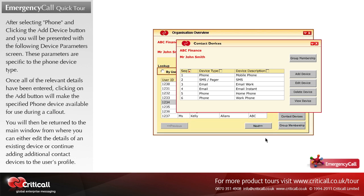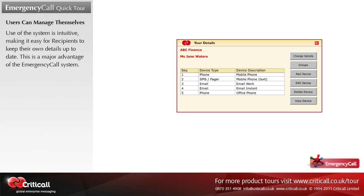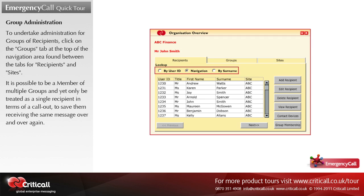You will then be returned to the main window, from where you can either edit the details of an existing device or continue adding additional contact devices to the user's profile. It is possible to enable a recipient to directly access the Emergency Call system themselves via a web browser, where they can only manage their own details including contact devices. They will not be able to initiate a call out, perform any further administration functions, or view the reporting suite. On logging on, a recipient at this level will see a screen showing only their own details. Use of the system is intuitive, making it easy for recipients to keep their own details up to date — a major advantage of the Emergency Call system.